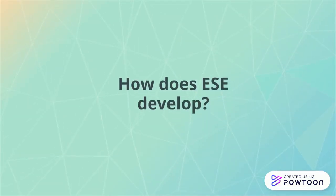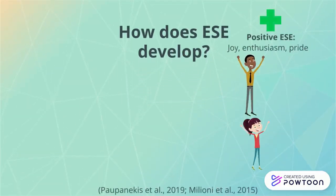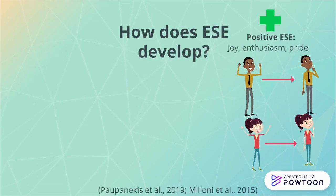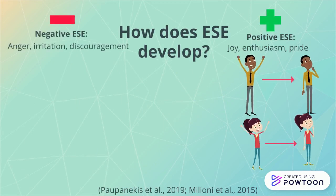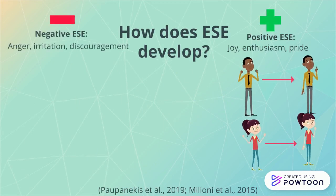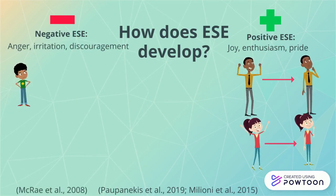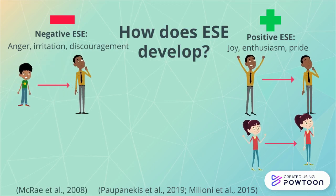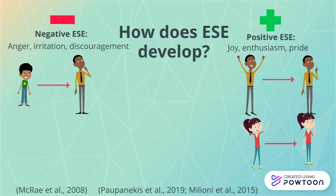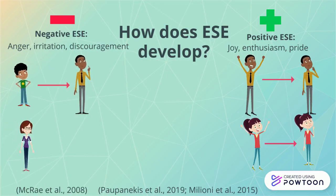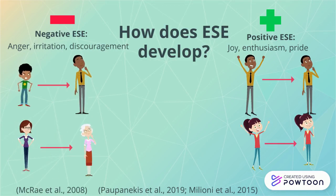For example, as all individuals age, their positive ESE will increase, whereas for negative ESE this is dependent on gender. Males believe that they can manage negative ESE better during adulthood — this may be a reason as to why John thought he could manage his anger at the football game — whilst females believe that they can manage negative ESE better in old age.